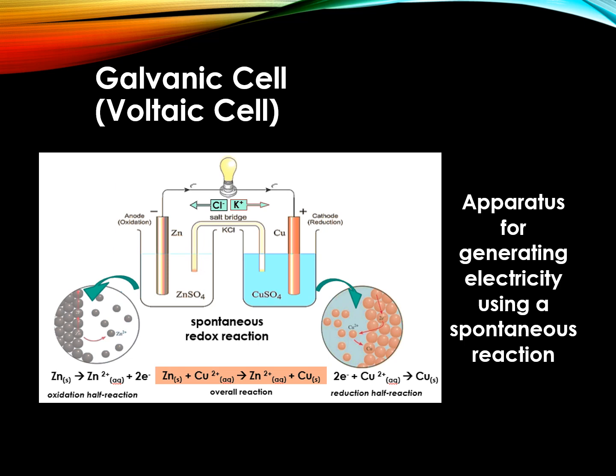A simple salt bridge consists of an inverted U-tube containing an inert electrolyte solution, such as potassium chloride KCl or ammonium nitrate NH4NO3. The openings of the U-tube are loosely plugged with cotton balls to prevent the potassium chloride solution from flowing into the compartments while allowing the anions and the cations to move across.